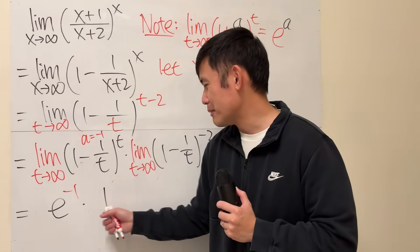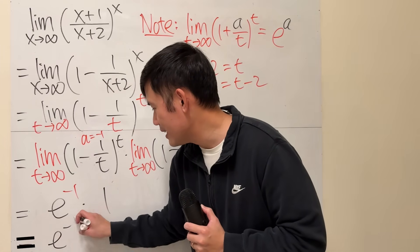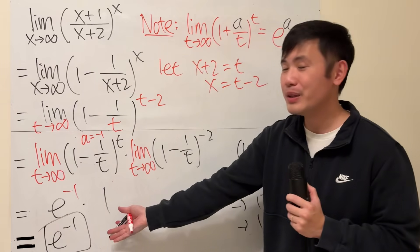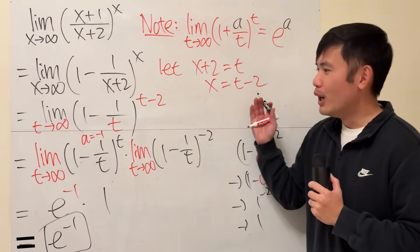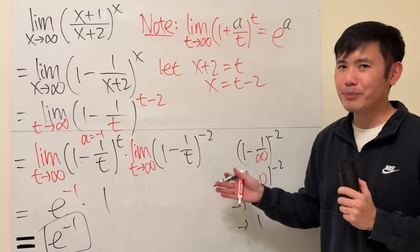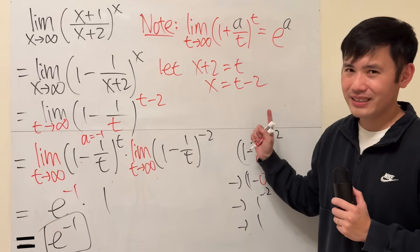Finally, this times that, of course, the answer is just e to the negative 1. And then, we are done. Hopefully, this right here helps. For more examples just like this, you can check on other videos. That's it.